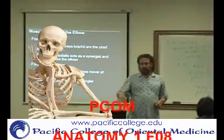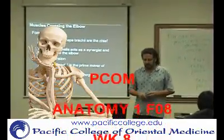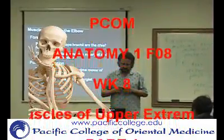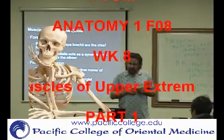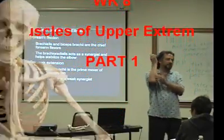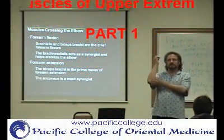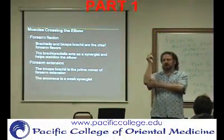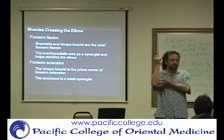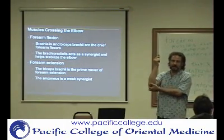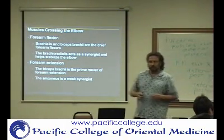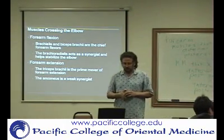Previously, we'll also go through the origins and insertions again. There's also the anconeus, which is kind of like a wannabe muscle. It doesn't really do that much, but it is an elbow extensor, and we'll go over that as well.